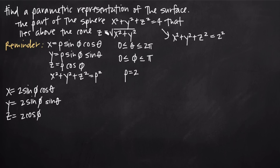In order to represent only the part of the sphere above the cone, we need to limit the intervals on which theta and phi are defined. Normally in spherical coordinates for the complete sphere, theta is defined on the interval 0 to 2 pi, which makes sense because theta is the degree measure around the entire sphere — the full circle.